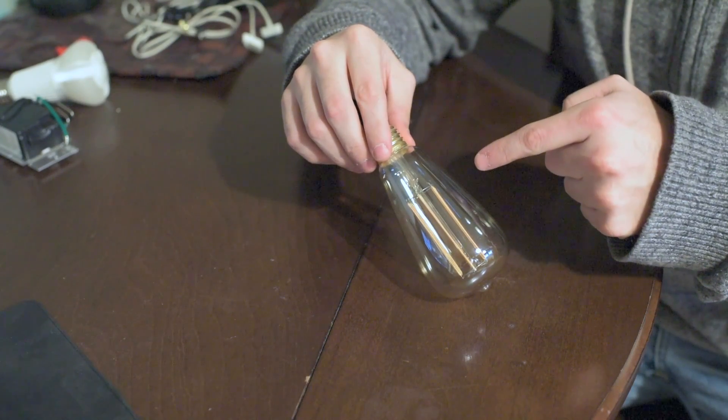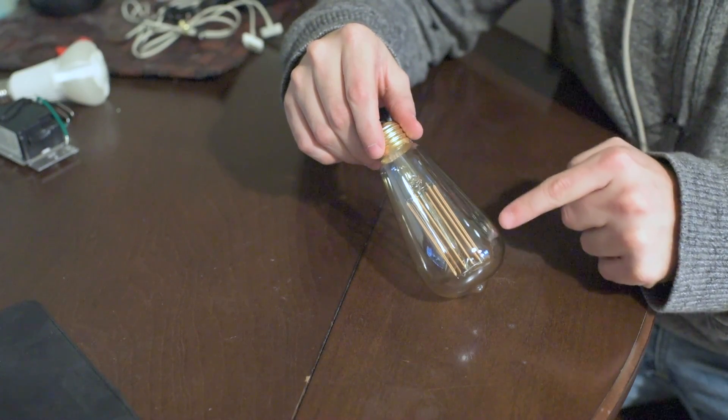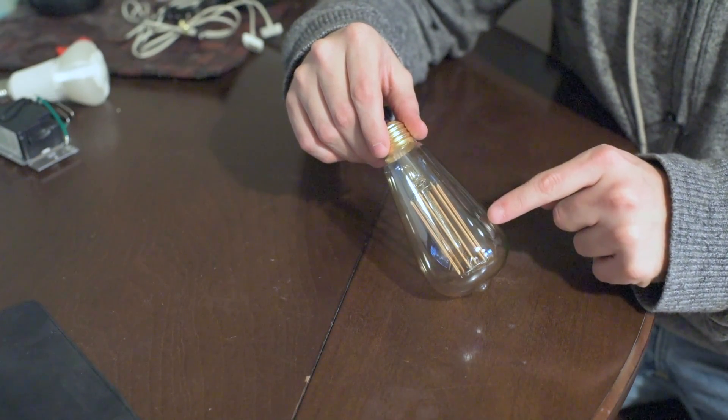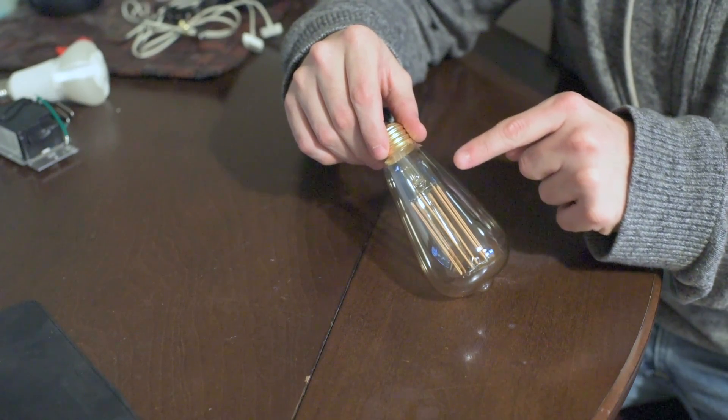So each one of these little vertical bars inside of the glass here that's yellow or orange or whatever color you want to call that, each one of those is an LED or maybe a series of LEDs.